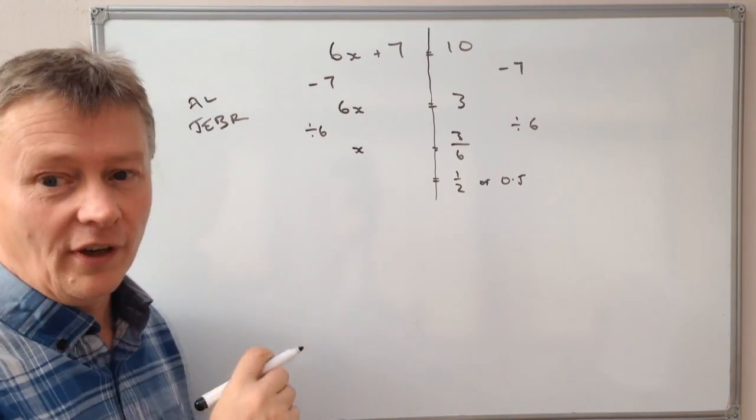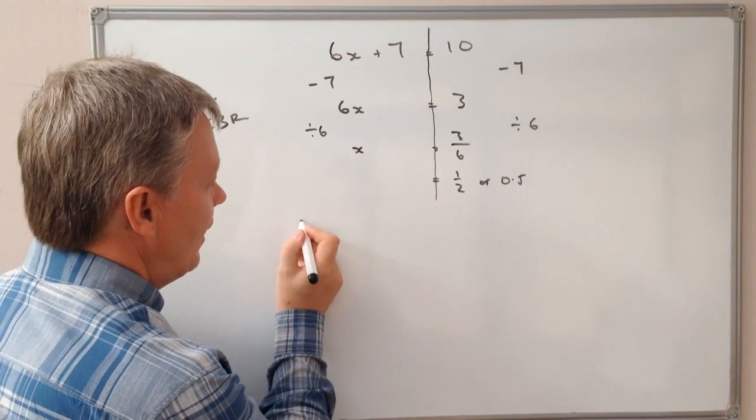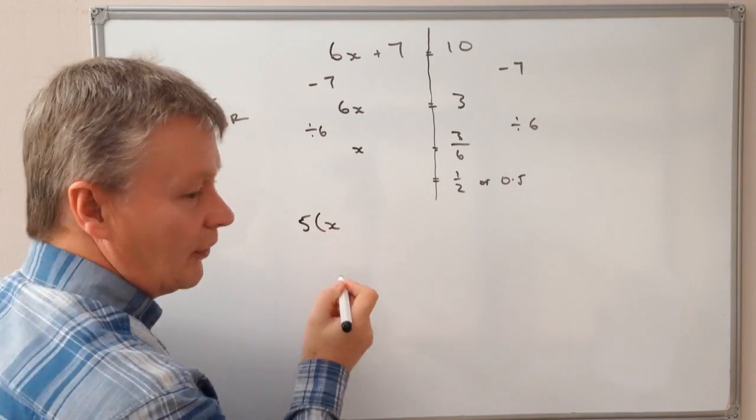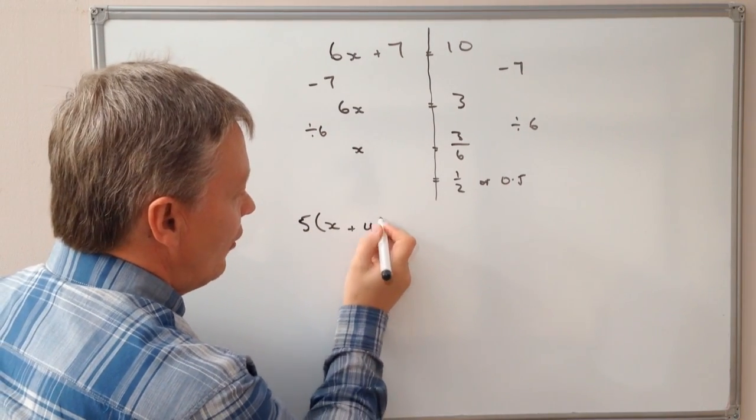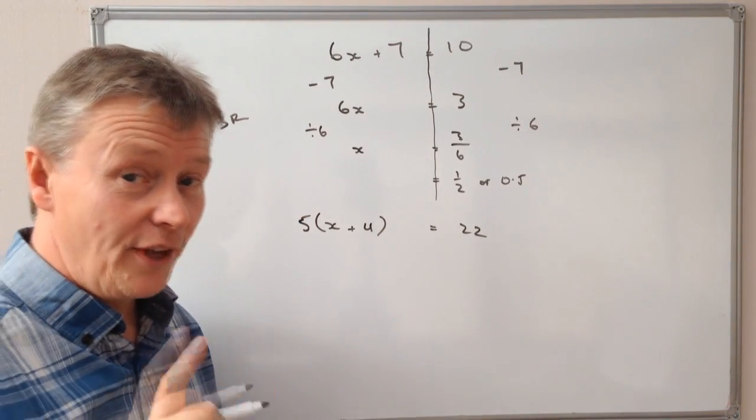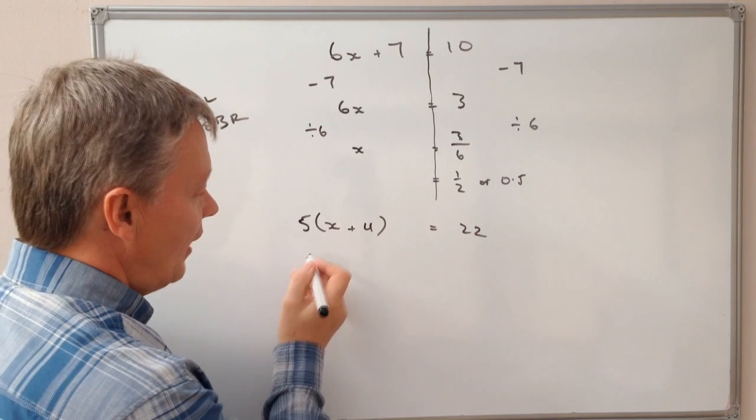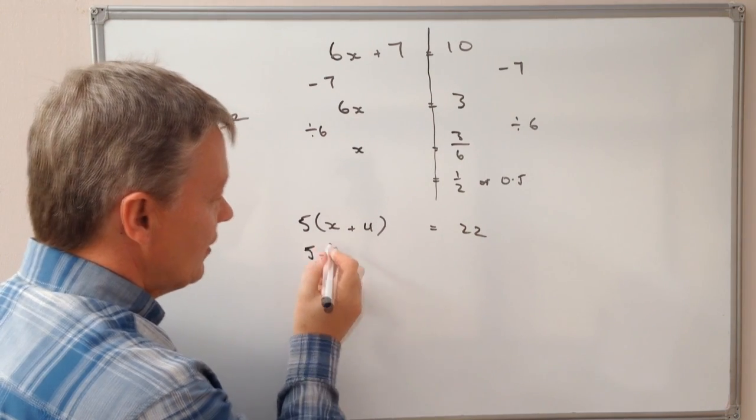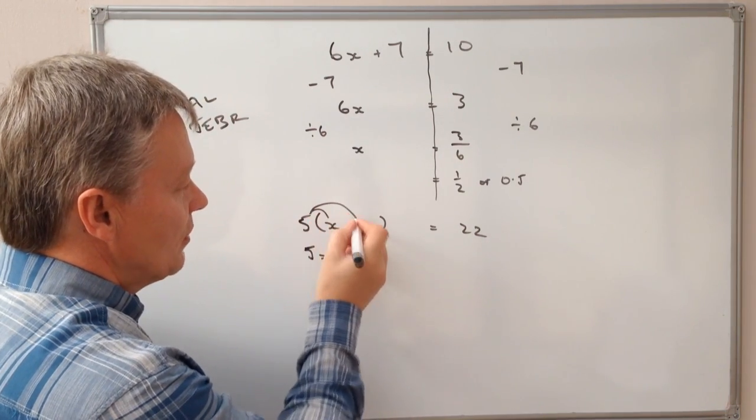Let me give you one very quick example where we've got brackets. So we've got 5 times (x plus 4) equals 22. I'm going to do exactly the same thing, but the first thing I need to do is get rid of these brackets. So that's going to be 5x, because I multiply that, then multiply that,